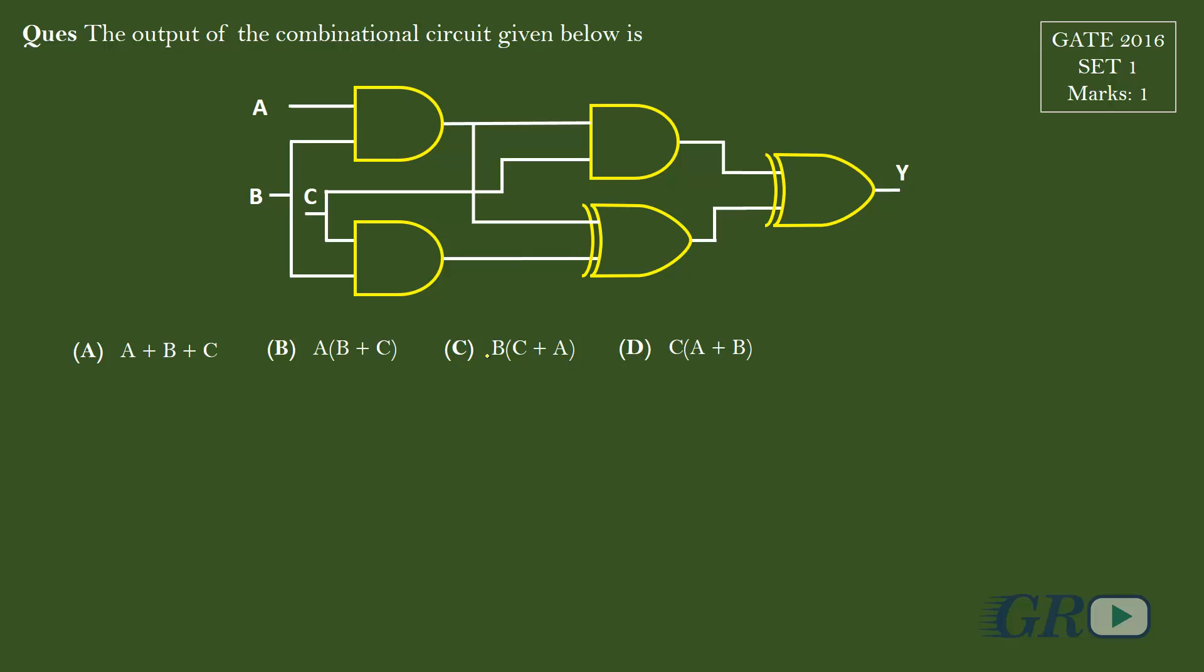First of all we will start by writing the intermediate outputs. Here we will get A dot B, here C, here we will get A dot B dot C, here again A dot B, here we will get B dot C. Now here we will get AB XOR B dot C, so Y will be ABC XOR with AB XOR B dot C.